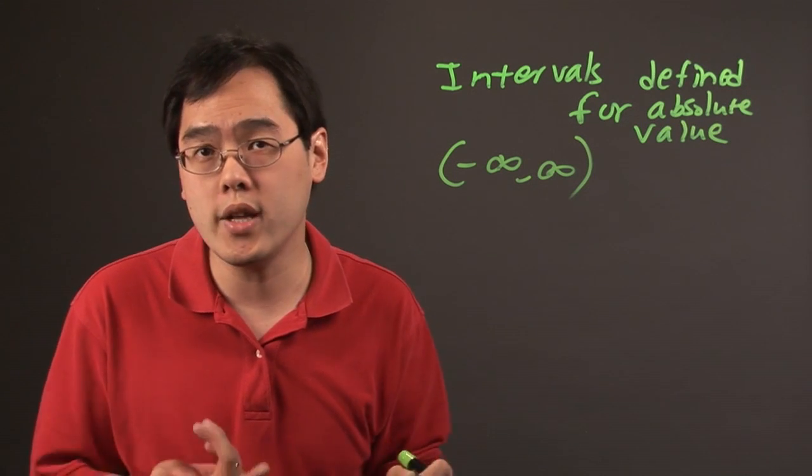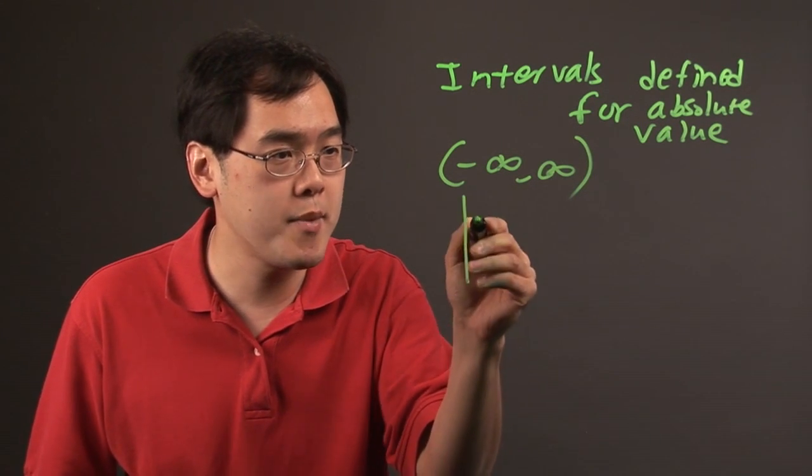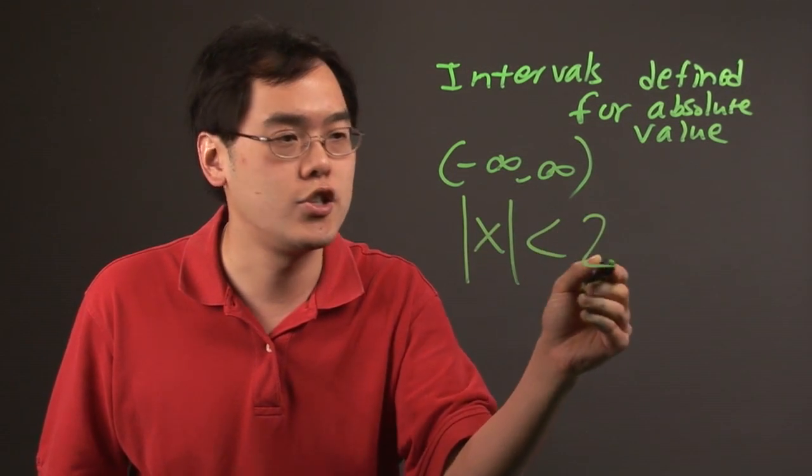If you're solving an absolute value inequality, for example, that's where it's going to change. So for example, if you have the absolute value of x less than 2...